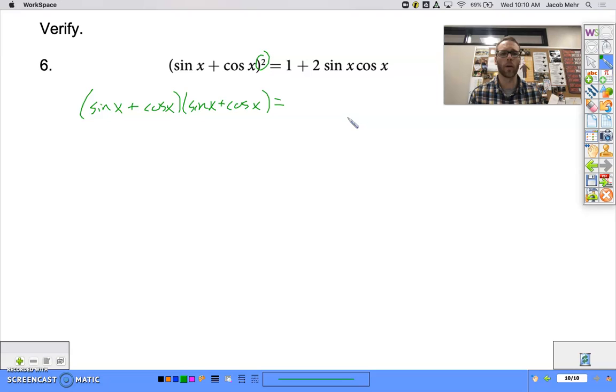You know, we're used to thinking about the word FOIL to multiply. We can do that here. So let's take sine times sine is sine squared plus sine times cosine plus cosine times sine.